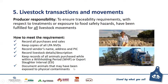The fifth element is livestock transactions and movements. The producer's responsibility is to ensure that traceability requirements with respect to treatments or exposure to food safety hazards have been fulfilled for all livestock movements. You need to record all purchases and sales — also in the NLIS database — keep copies of all LPA national vendor declarations, record the vendor's name, address and PIC, record livestock details and descriptions on the NVD, keep records of all animals purchased and within a withholding period or export slaughter interval, and document animals that may have been exposed to any physical contaminants entering your property.